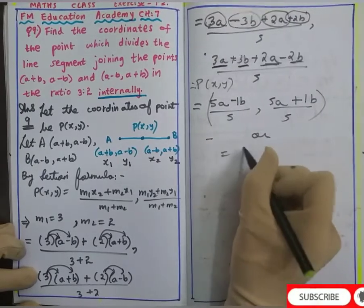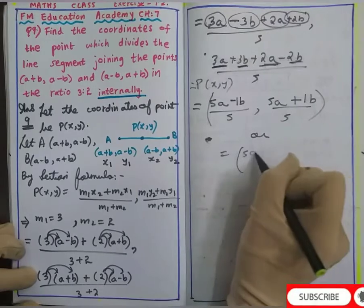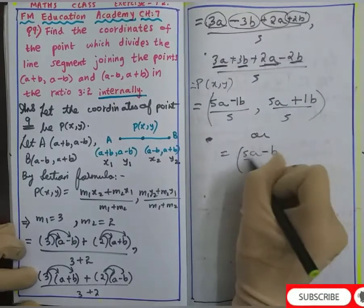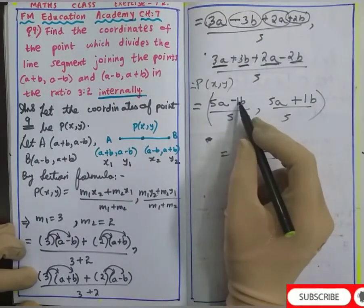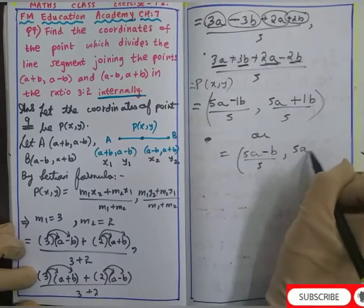We can also write this as (5a - b)/5, (5a + b)/5. The coefficient of 1 may be there or not, it is the same thing. So this is my answer.